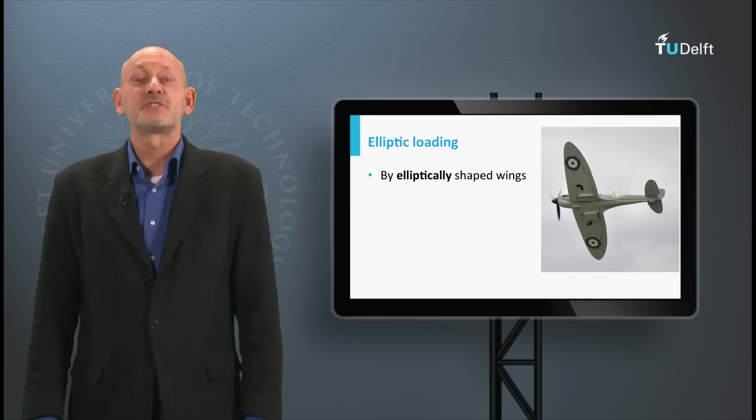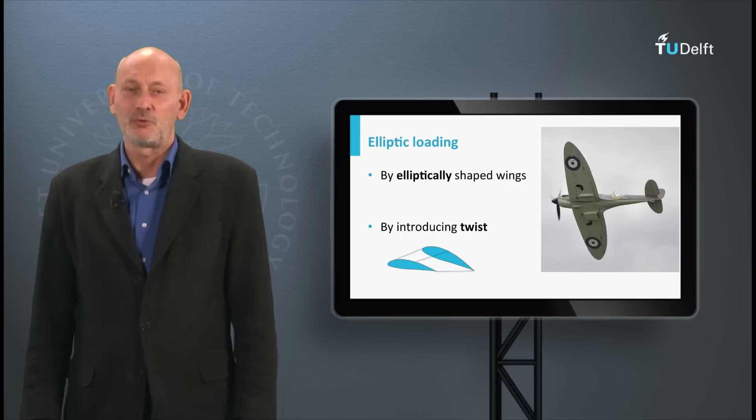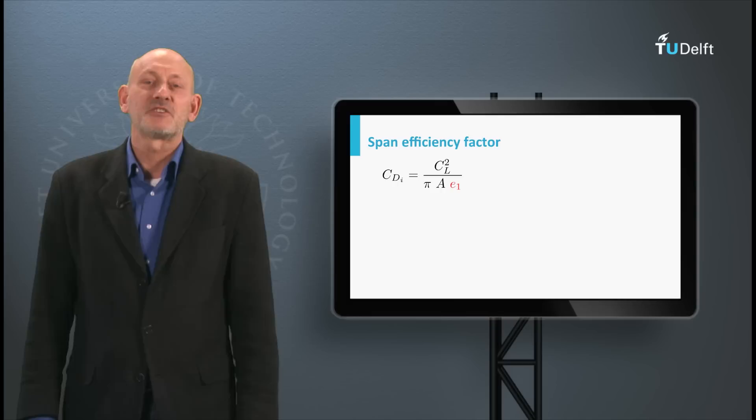When we have a different planform of the wing, we can introduce twist. By varying the angle of attack of the airfoils in the wing along the span, the resulting lift coefficient distribution together with the chord distribution can give an approximation of the elliptic load distribution.